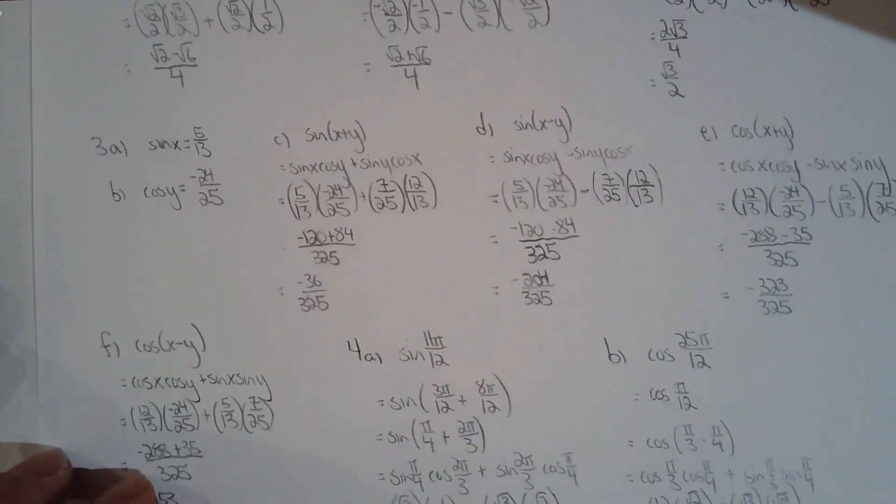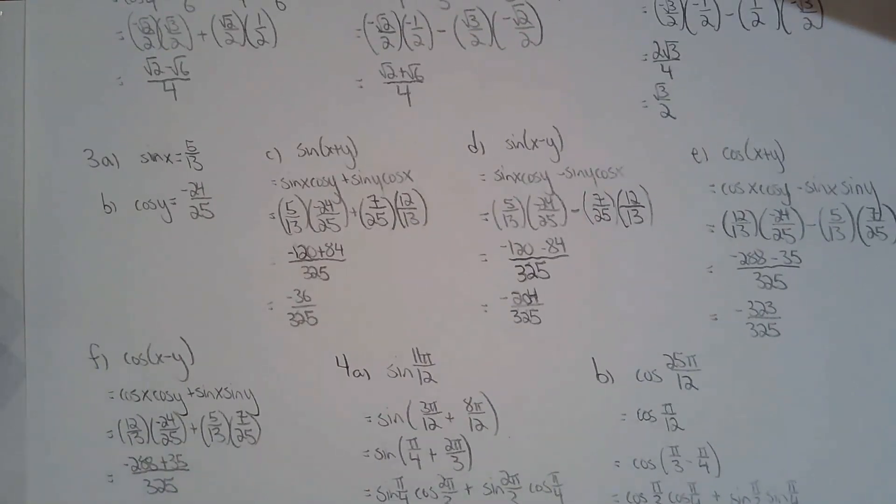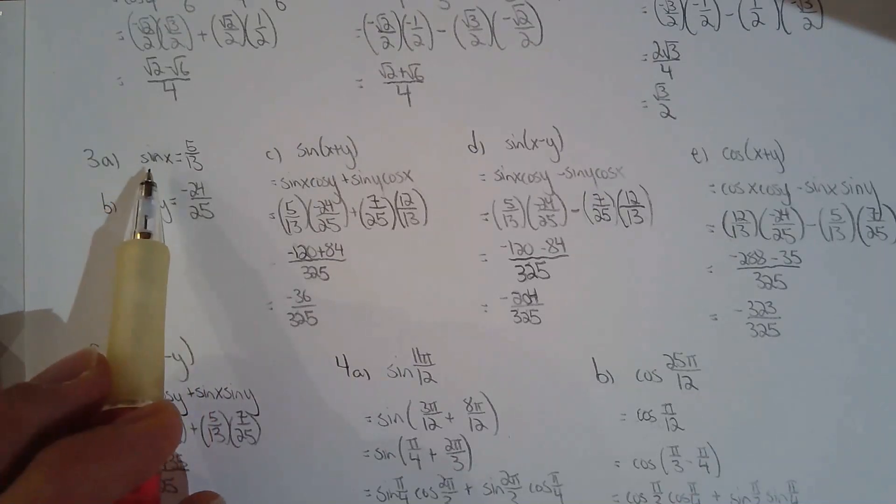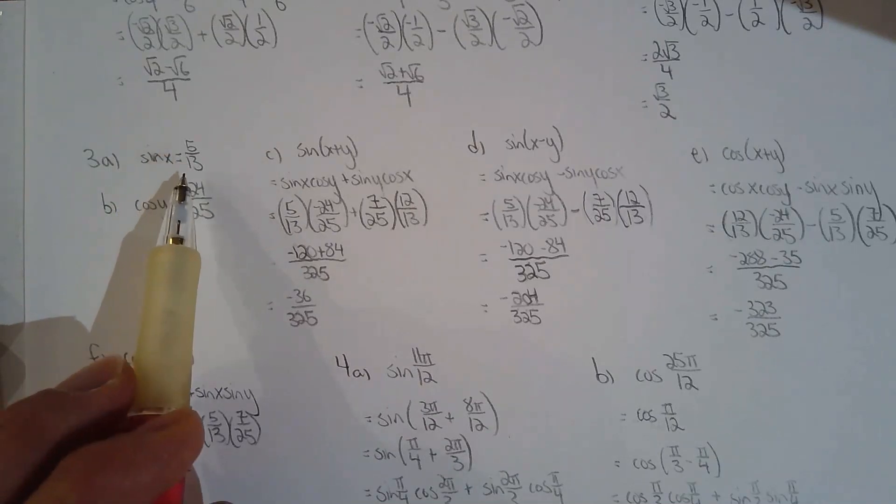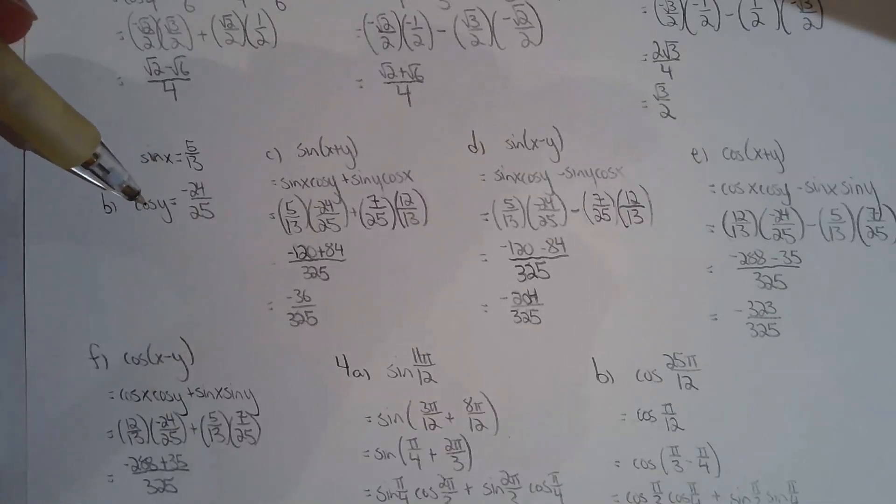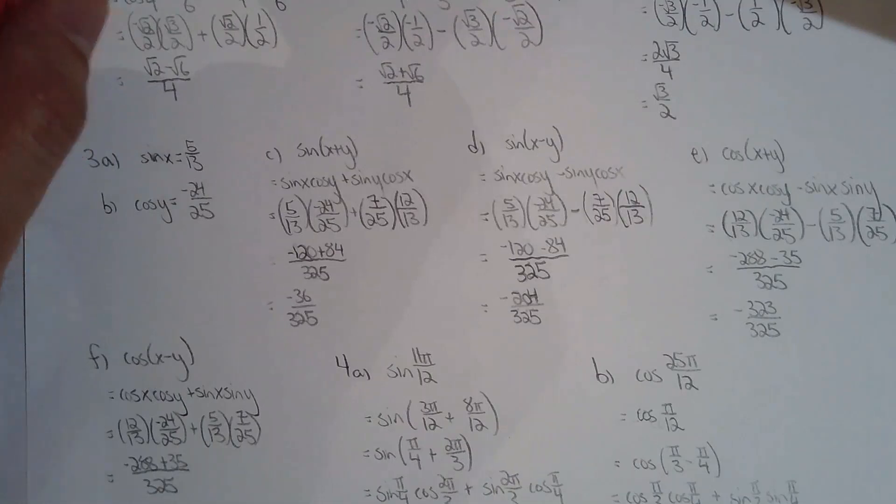Okay, so for 3, you are given cos x is 12 over 13 and sine y is 7 over 25. And they ask you for sine x first. So I didn't do the x squared plus y squared equals r squared, because I know the 5, 12, 13 Pythagorean triple. So right away, if cos x is 12 over 13, then sine x must be 5 over 13. And it's positive because I was told the angle x is in the first quadrant. Now cos y, I also didn't show you using the x squared plus y squared equals r squared, because I know this is a 7, 24, 25 Pythagorean triple. Now this one's negative because they told me that y is located in the second quadrant.